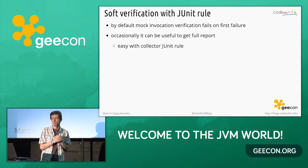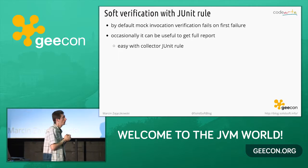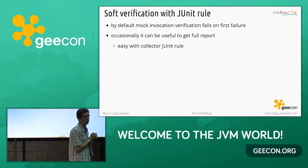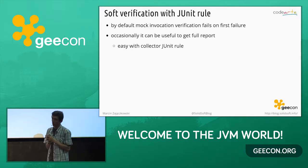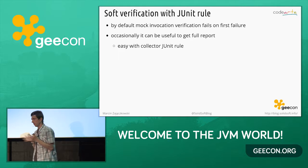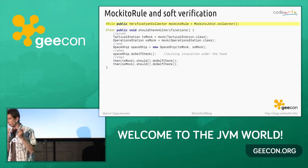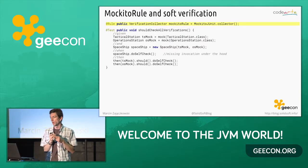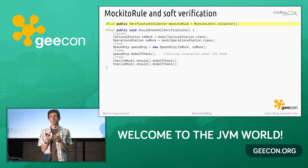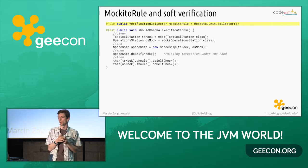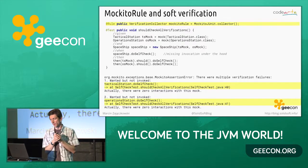Another mechanism in Mockito is the ability to do soft verification on mocks — a counterpart to soft assertions from AssertJ. By default, Mockito will fail on the first interaction verification that was not fulfilled. However, sometimes — especially with integration tests — you would like to see the full list of unfulfilled verifications. To do that, it's enough to use the Mockito Rule with a collector, and soft verification will take place at the end of the method in a teardown.